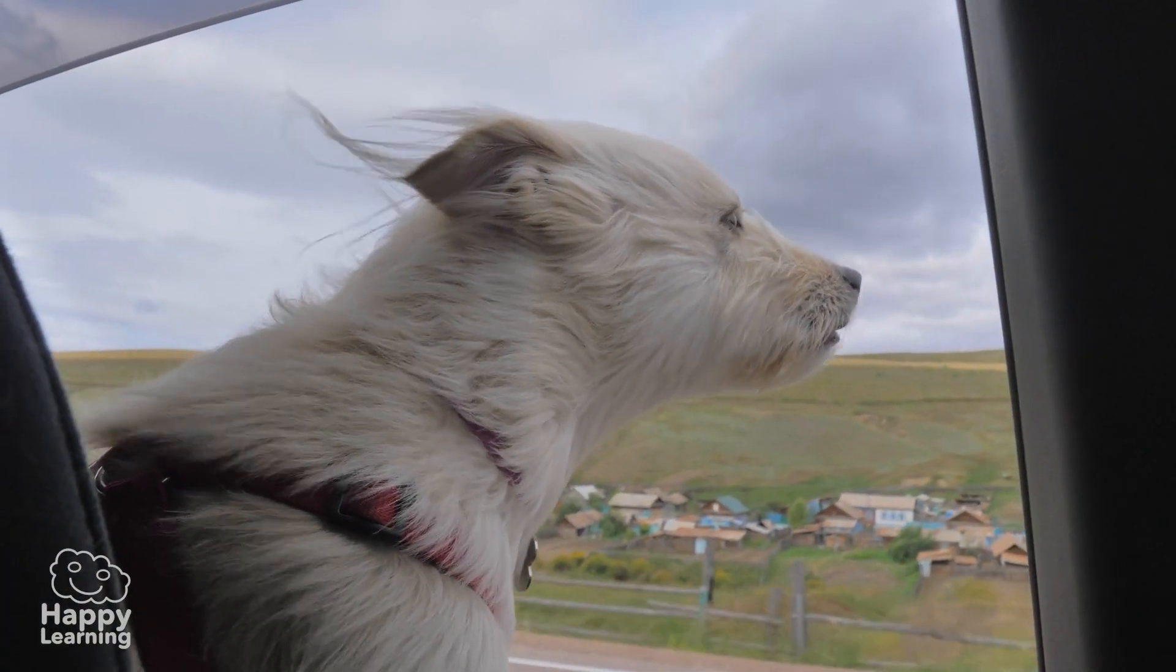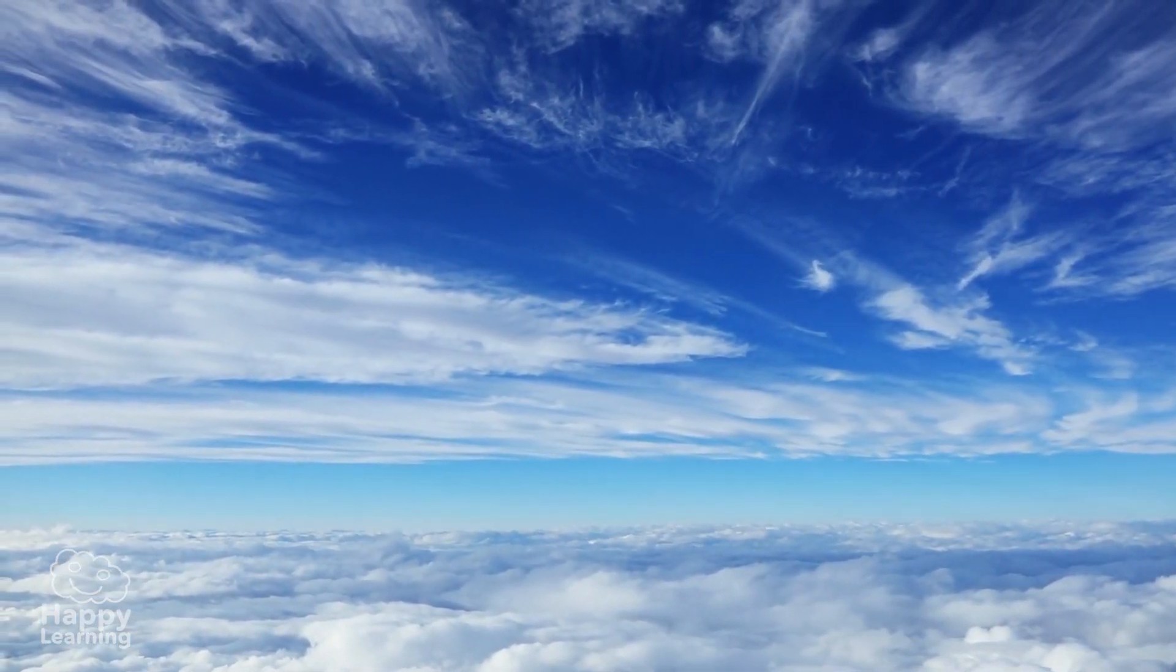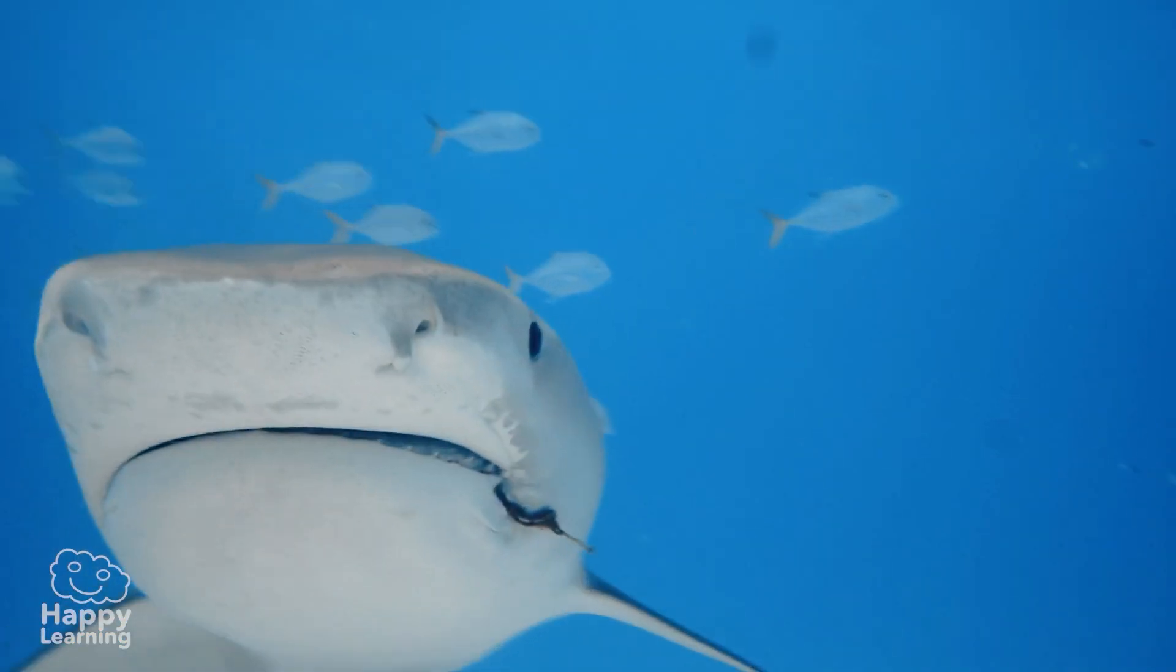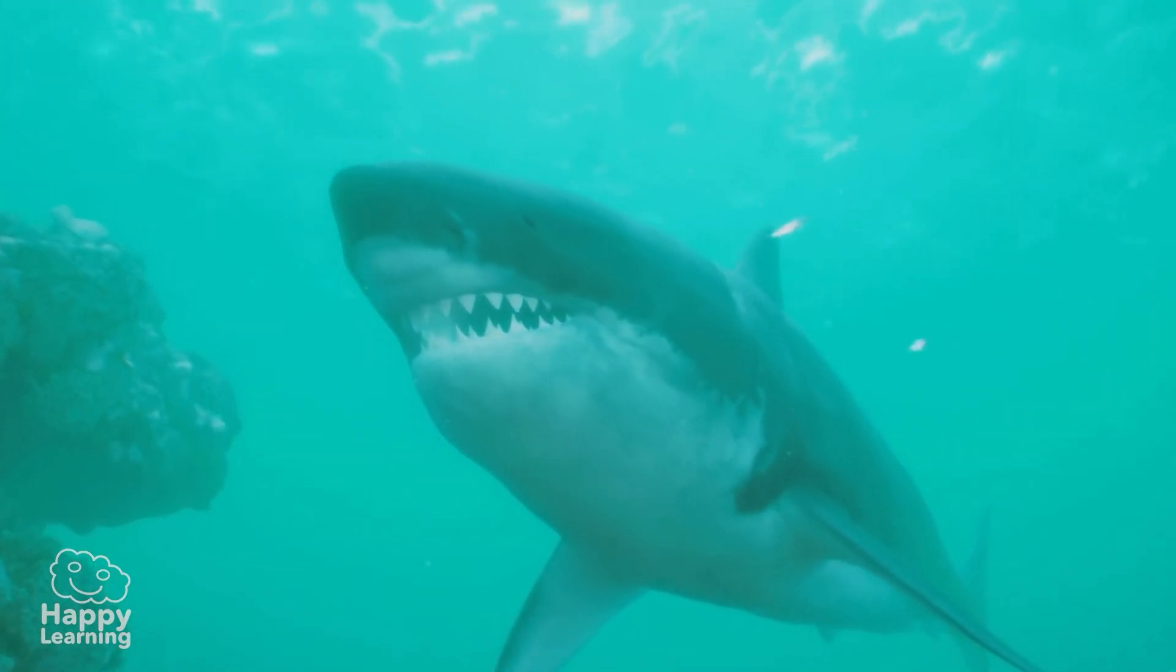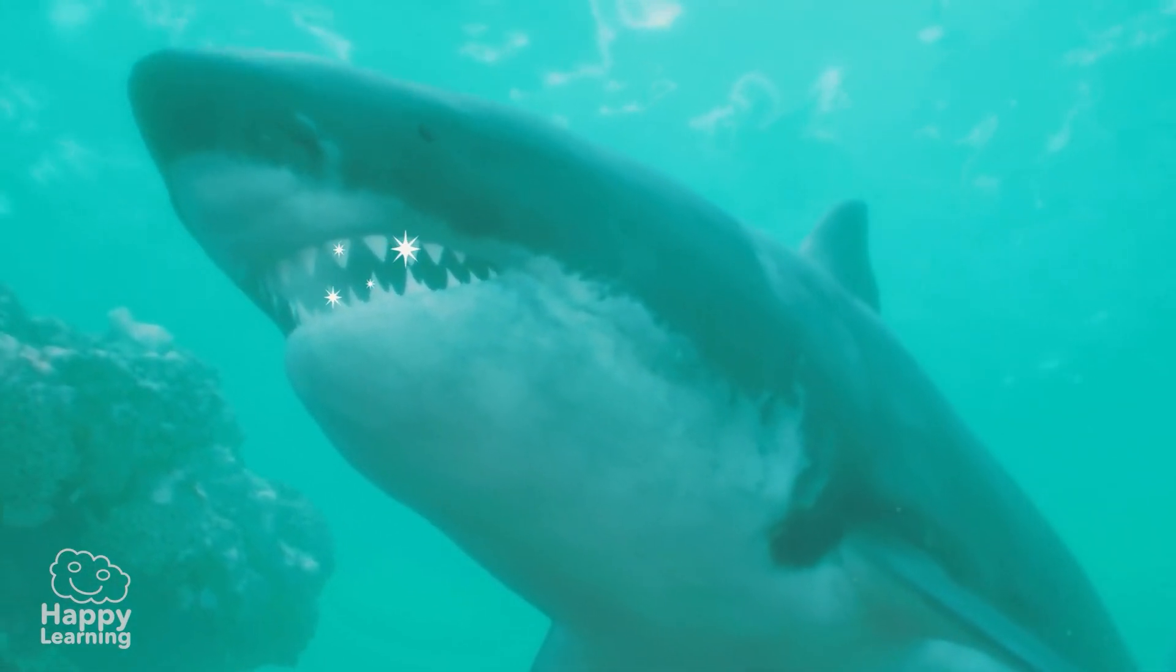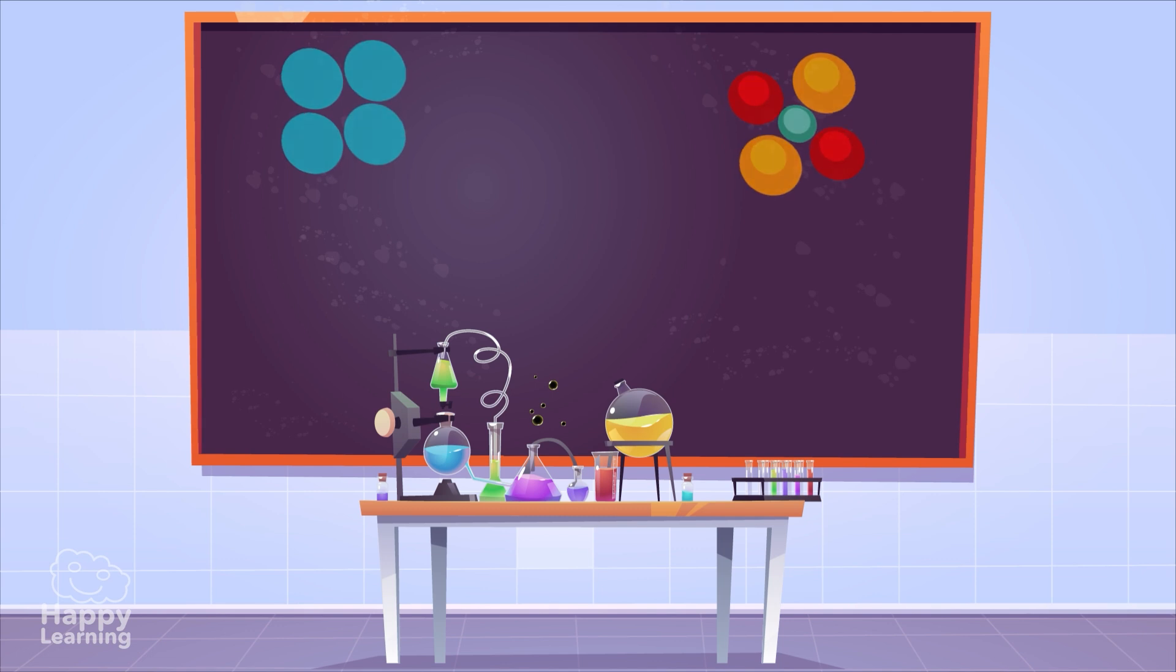But there is also matter composed of two or more substances, such as air that is formed from different gases, or these sharks that are formed, among other things, by cartilage, meat, and many teeth very sharp.